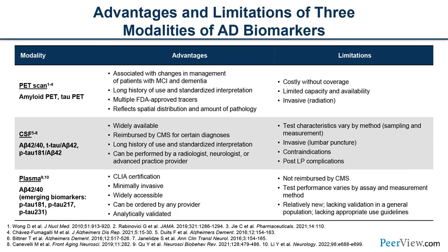PET scanning can measure amyloid and tau, has a long history of use, standardized interpretation, multiple FDA-approved tracers, and reflects both the distribution and amount of pathology. However, PET is costly — particularly without coverage — has limited availability, is mildly invasive due to radiation exposure, and you can only measure one target at a time, requiring separate visits for amyloid PET and tau PET.